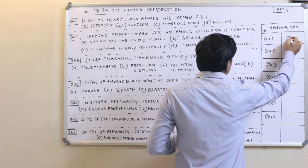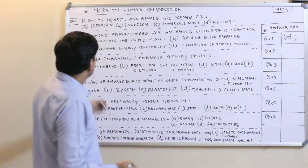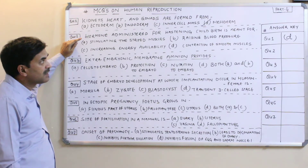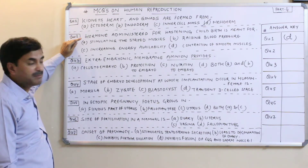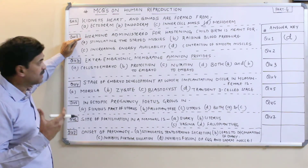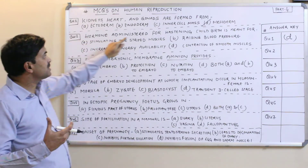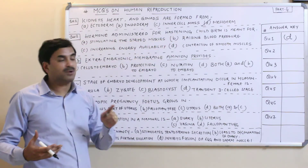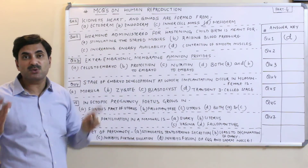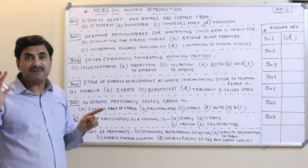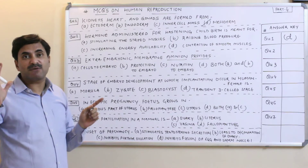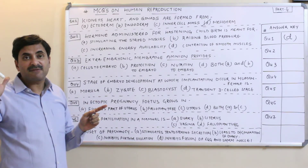Question number one answer is D. Question number two: the hormone administered for hastening childbirth — that is, the hormone responsible for quick childbirth — is oxytocin. Oxytocin has its impact on the smooth muscles of the uterus.